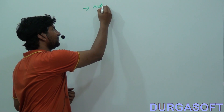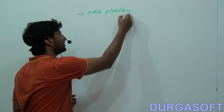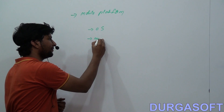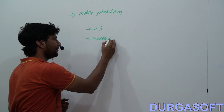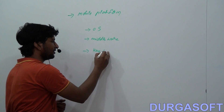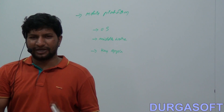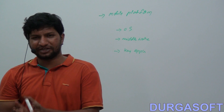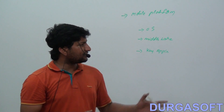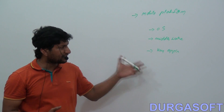Android is a mobile platform. It consists of an operating system, middleware, and key applications. This is the definition of Android — it is a mobile platform which consists of operating system, middleware, and some key applications. I will justify this definition with the help of architecture.